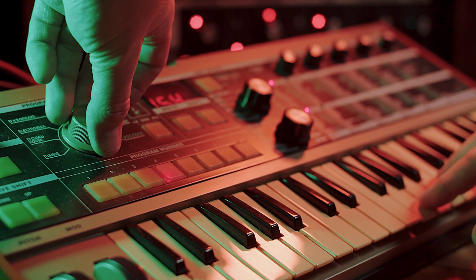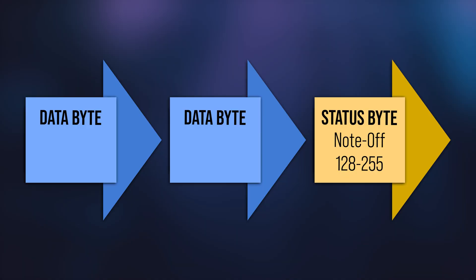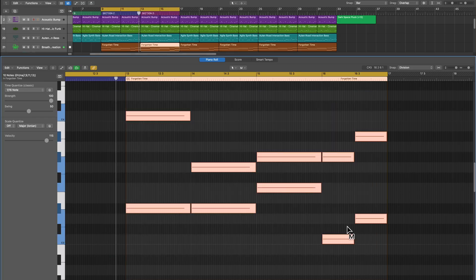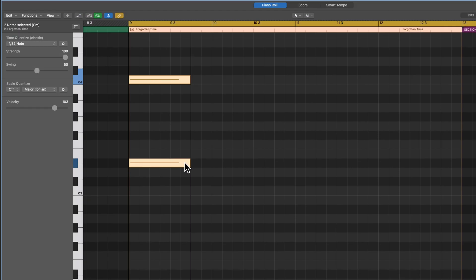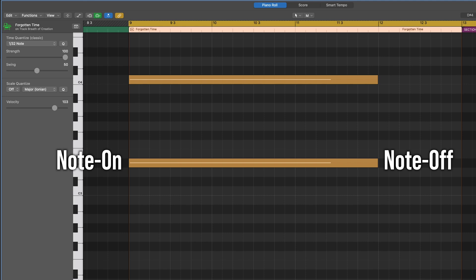The existence of a note-on message implies the existence of a note-off message, telling the instrument that you have released the key. A note-off message is very similar in structure: the status byte says this is a note-off message, the first data byte defines the pitch that's being turned off. There is such a thing as note-off velocity — how quickly or slowly you release the key — but it's not always used. Often a velocity of zero is interpreted as a muted note, so you'll hear no sound. The time interval between note-on and note-off messages is what determines the length of notes.